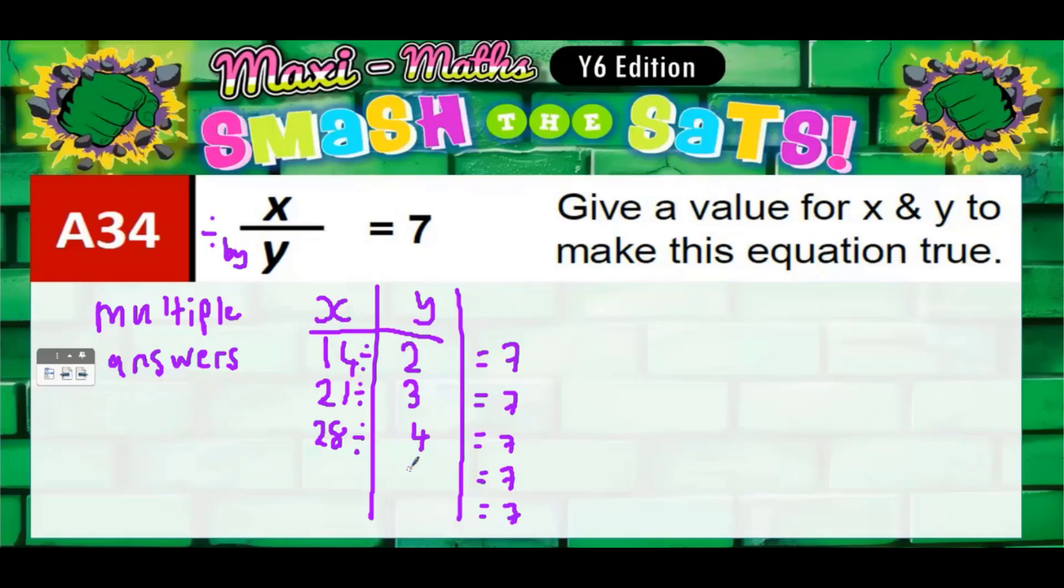It doesn't have to be easy numbers. You could pick bigger numbers. You could go up to 10. What number divided by 10 would give us 7? Well, 7 times 10 be 70. 70 divided by - if x was 70 and y was 10.